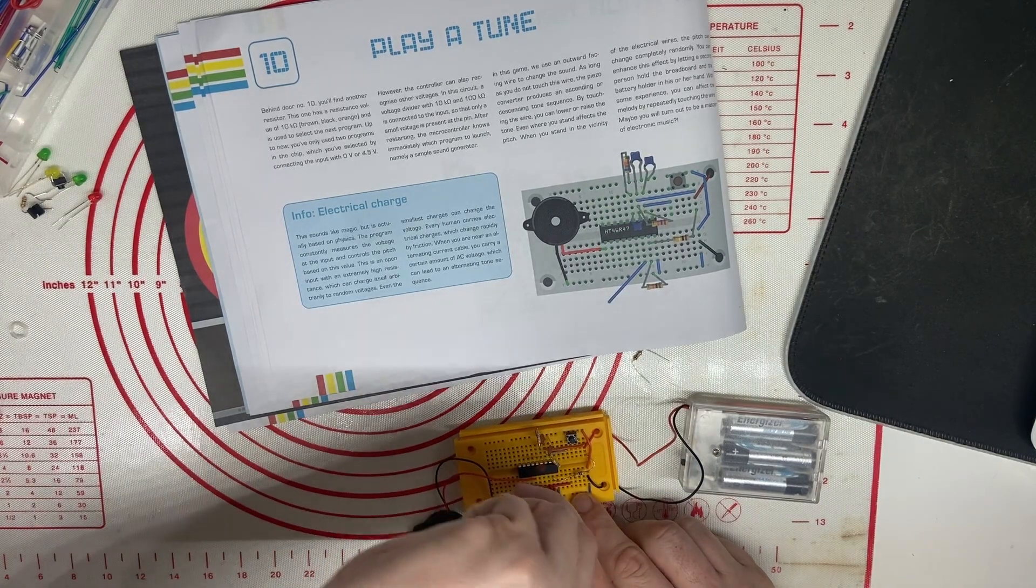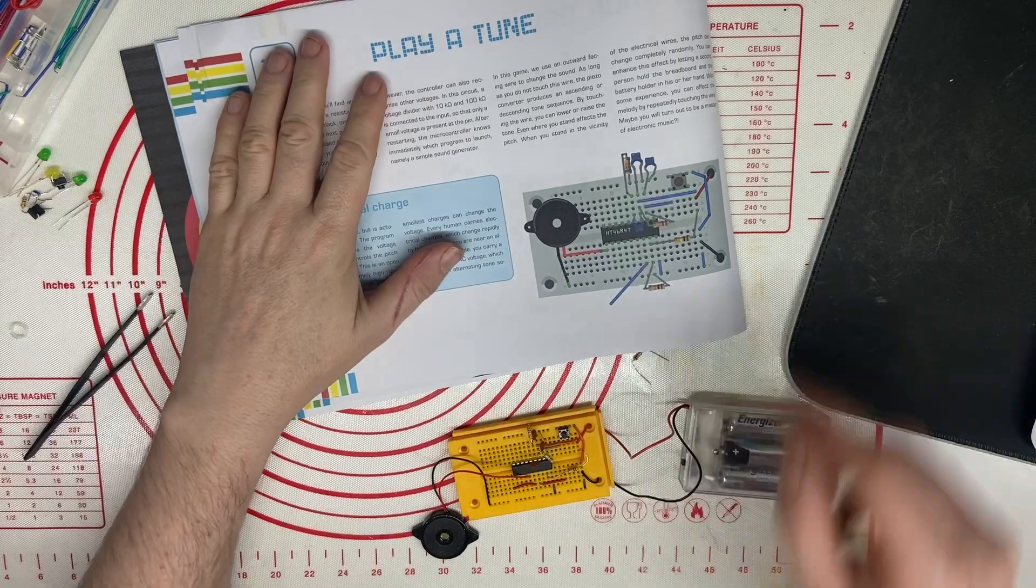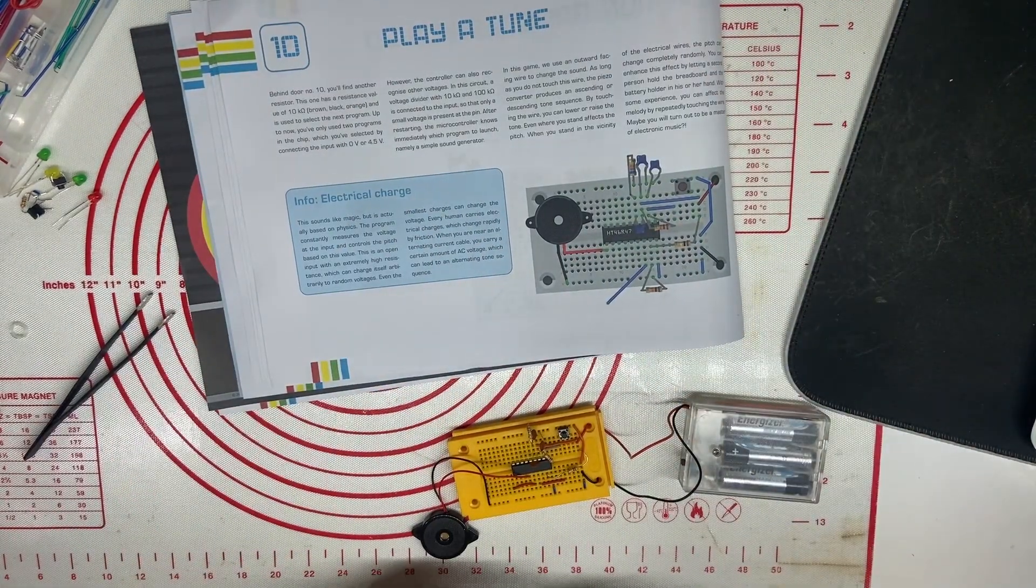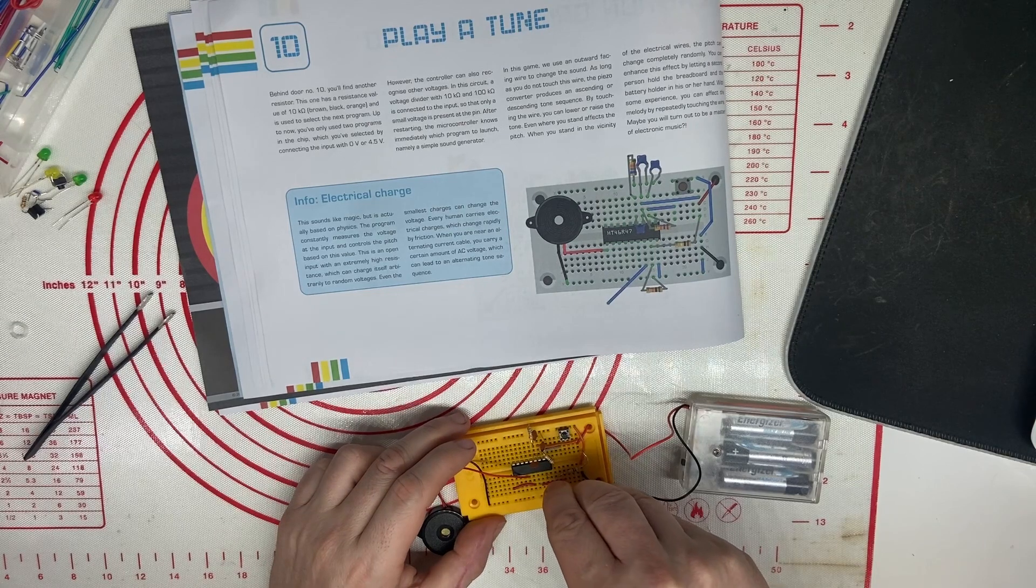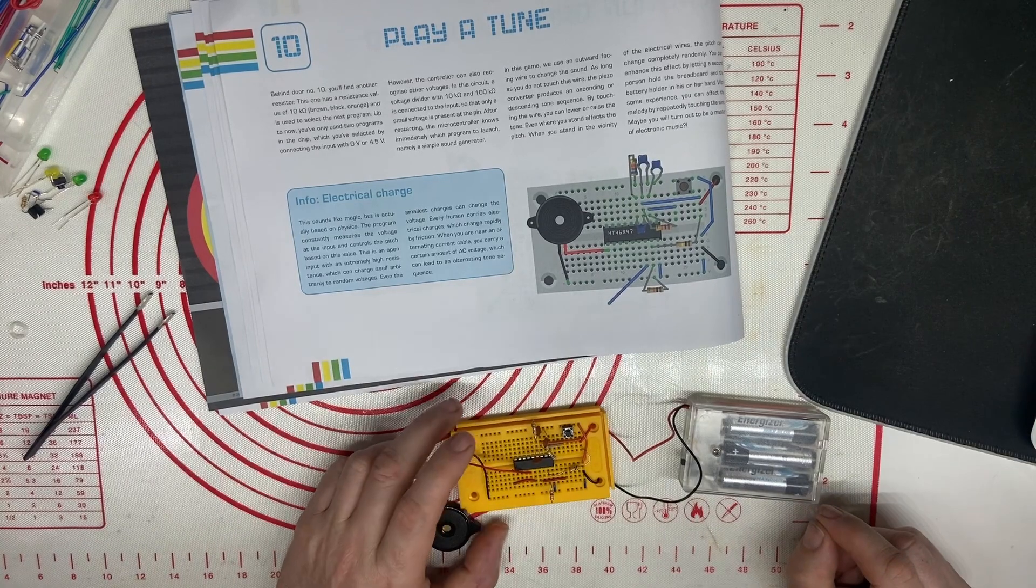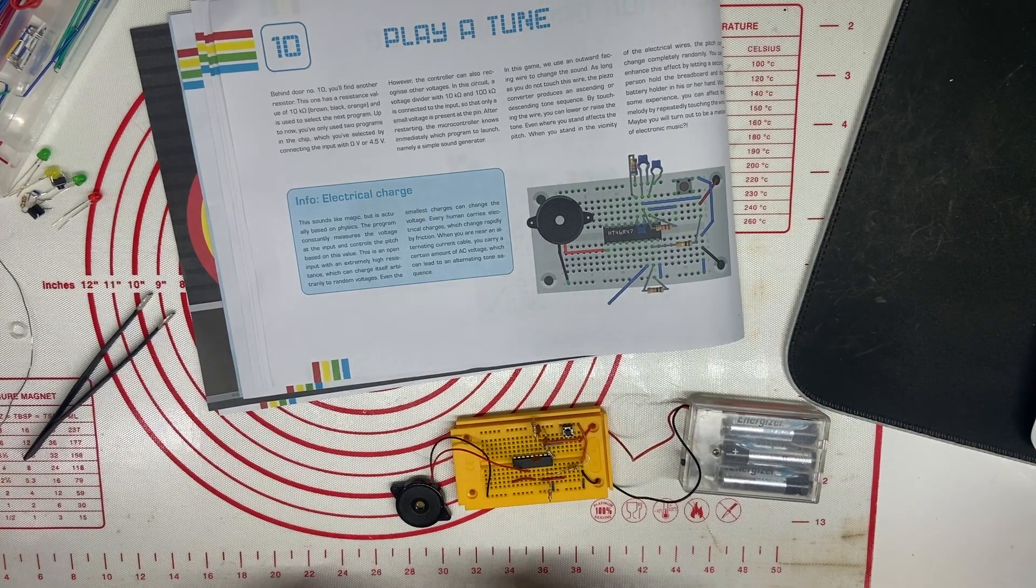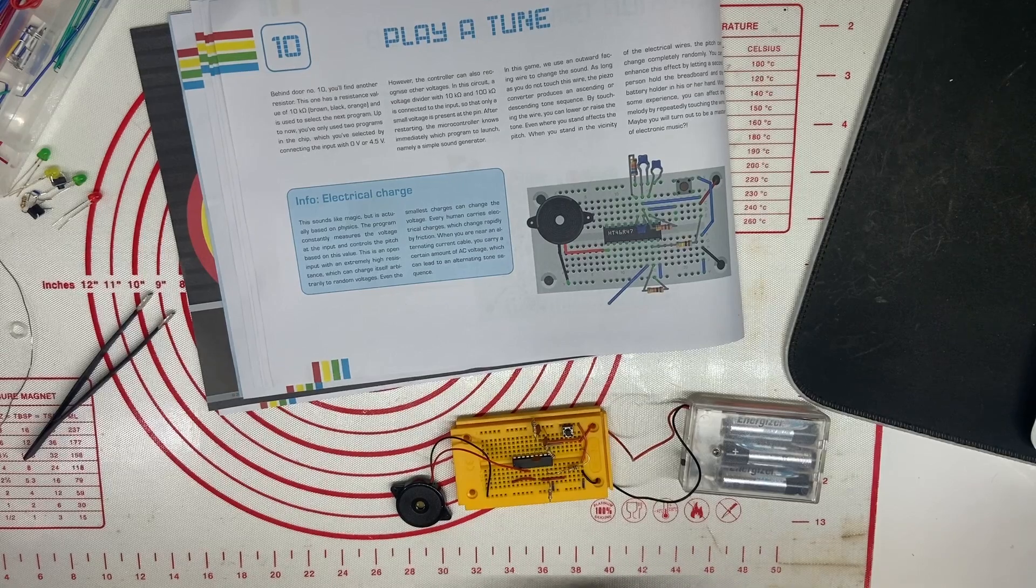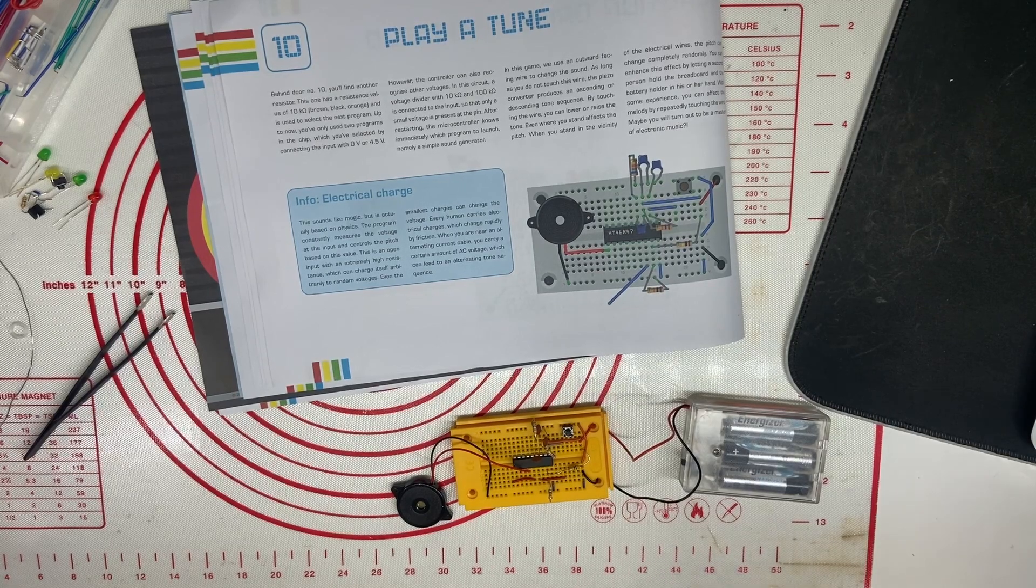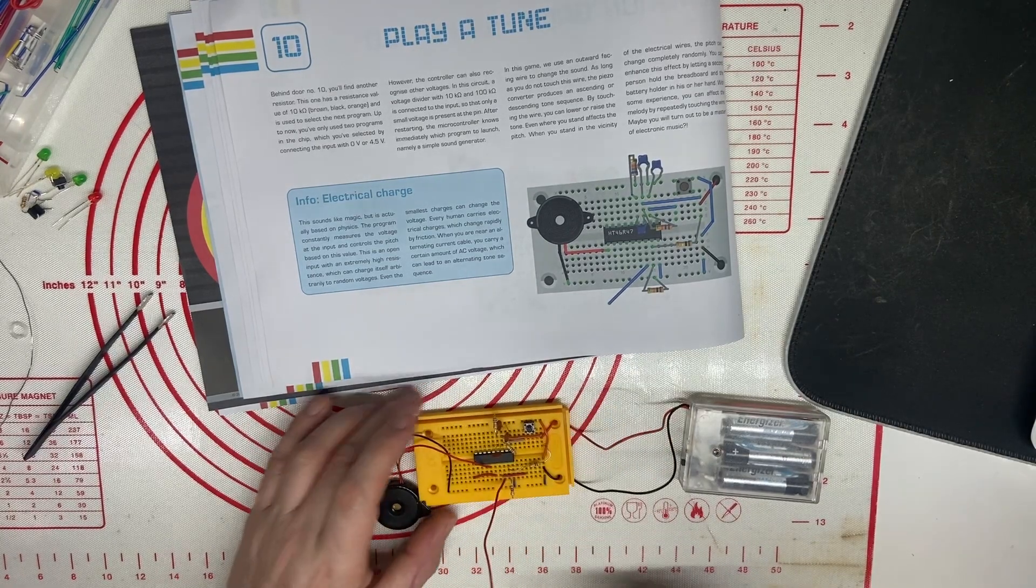We take the resistor and we plug that in where the jumper was. We take our pin we use for our wire maze and we put that in there.